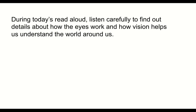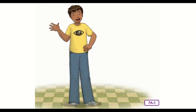As we listen to today's story, I want you to listen carefully to find out details about how the eyes work and how vision helps us understand the world around us. Imagine a typical day — you're always looking around at people, books, screens, animals, cars, and trees. Before crossing a street, you look both ways for traffic. What part of your body do you use to look at all of these things? Your eyes, of course. And which body organ do you think helps your eyes to see? Yes, the wondrous brain. Human eyes work together with the brain in order to see. Of all your senses, your sense of sight is the one you use the most.